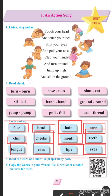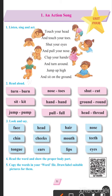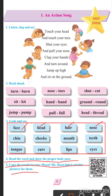Eyes — E-Y-E-S — eyes means aankhein. Students, you have done this earlier too. You all know very well about your body parts. Read the words and show the proper body parts to your parents. The next activity is to copy the words in your word file and draw and label suitable pictures for each body part.